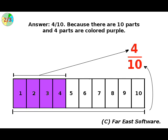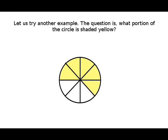Let's try another example. The problem is that they want us to find out what fraction of the circle is colored yellow. To solve the problem, we first count the number of parts that are shaded yellow.